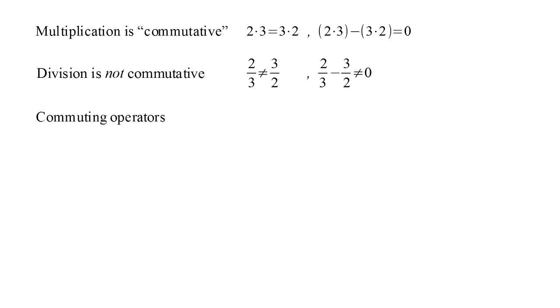In quantum mechanics, observations are represented as operators. Two operators, p-hat and q-hat, commute if p-hat applied to q-hat, applied to the wave function, equals q-hat applied to p-hat, applied to the wave function. In other words, if the order of making the observations doesn't matter.